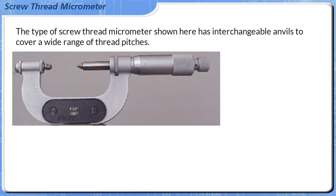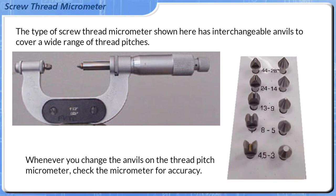The type of Screw Thread Micrometer shown here has interchangeable anvils to cover a wide range of thread pitches. Whenever you change the anvils on the thread pitch micrometer, check the micrometer for accuracy.